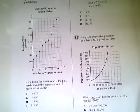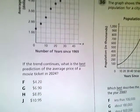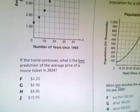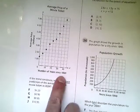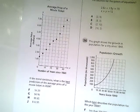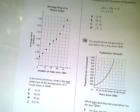Now, if the trend continues, the question asks, what is the best prediction of the average price of a movie ticket in 2024? Well, because the graph lists 1969 as our initial point or as our zero point, we need to figure out how many years there are between 2024 and 1969.